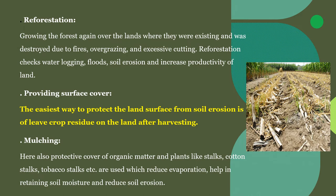Reforestation means regrowing plants that have been destroyed either by fire, cutting, waterlogging, floods, or soil erosion — this is a prime method of reclamation. Another method is providing surface cover — the easiest way to protect the land surface from soil erosion is to leave the residues of plants after harvesting the crop, which is a very common method adopted by Indian farmers.